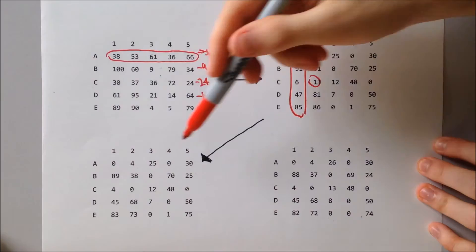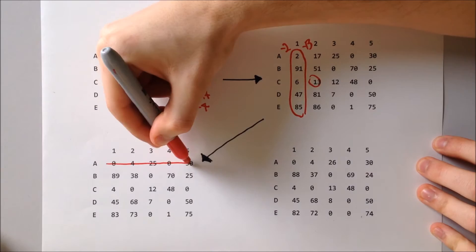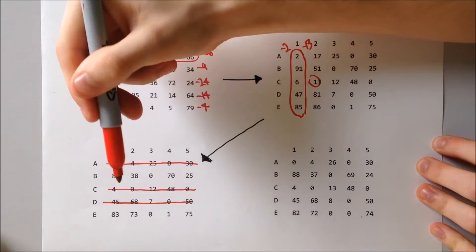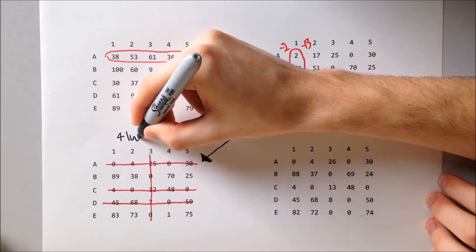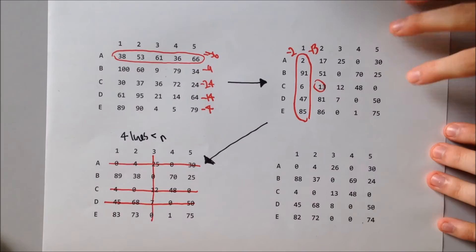Here is the updated matrix after column reduction. Our next step is to eliminate all zeros using horizontal and vertical lines. I must stress, it doesn't matter how we draw the lines, they just need to cover all zeros most efficiently. Unfortunately, the number of lines are not enough for us to start pairing, so we need to reduce again. We find the smallest number that is not crossed out and minus this from the rest of the uncrossed numbers.